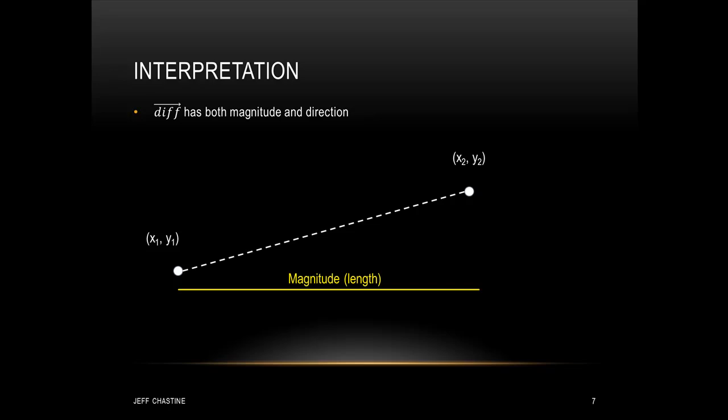So how would we interpret this difference? First, note that this difference has a magnitude — by magnitude we mean length. At the same time, we can also interpret the difference between these two points as a direction. You can imagine a line between point (0, 0) and (delta x, delta y), and the line between these two points represents the direction of the vector.